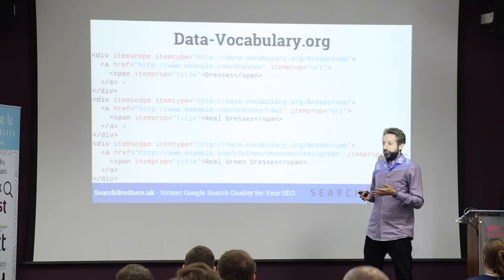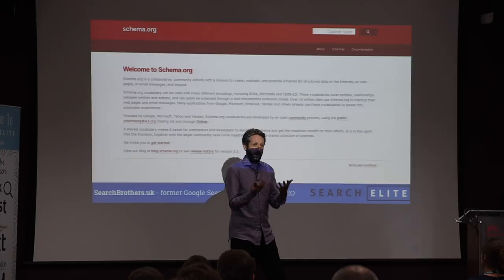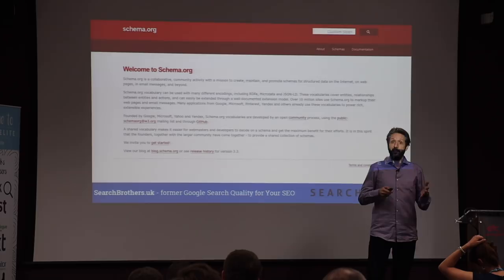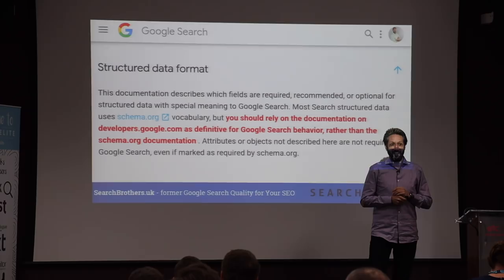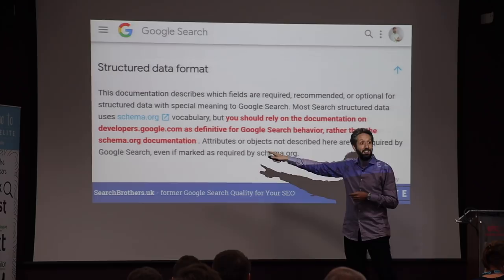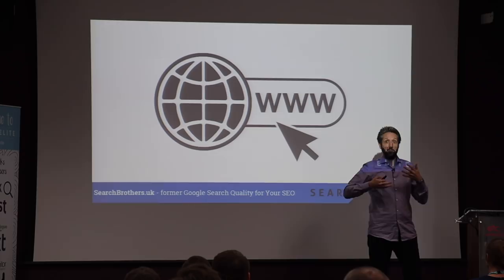So which one should we go for? Well, we used to have data vocabulary, and most of the schemas were originally based on that. We moved on to basically schema.org, which is a collaboration from different entities like Bing and Google trying to come up with a standard. There were some bugs in that and still are. This is not the one that Google actually recommends. Funny enough, they recommend their own. You should really rely on the documentation from Google Developers, rather than schema.org documentation. They explicitly say don't rely on schema.org, which I kind of find funny.